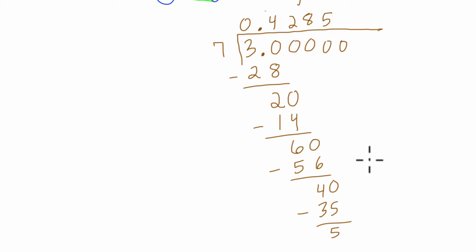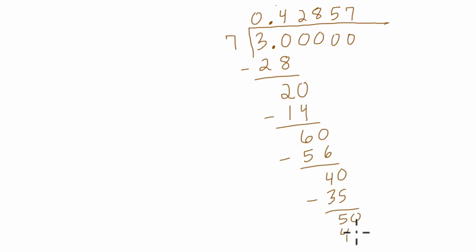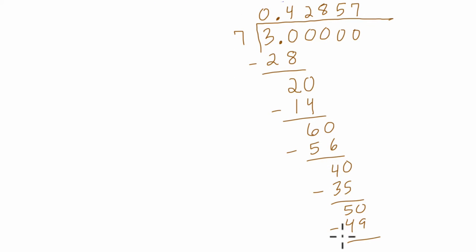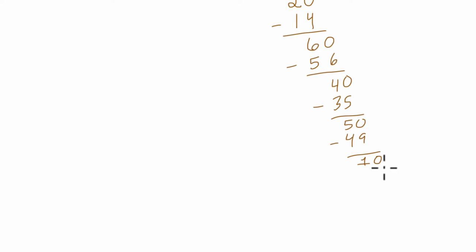And carry our 0 here. 7 goes into 50 seven times, because 7 times 7 is 49. We subtract 50 and 49 to get 1. 7 goes into 10 one time, right? And we keep going. 7 times 1 is 7. If we subtract 10 minus 7, we get 3.